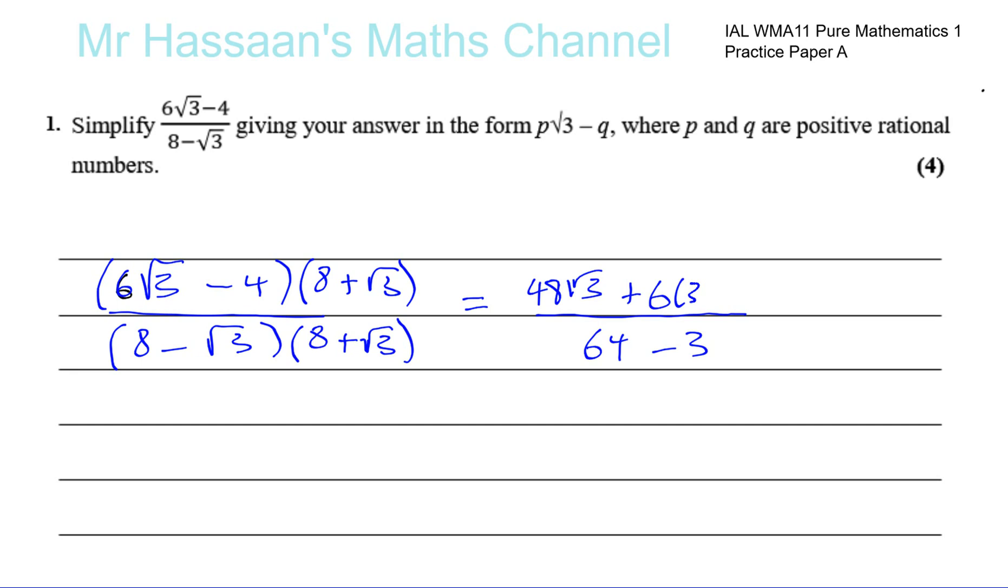√3 times itself is 3, if you remember. And then we finish with the 6√3. Now minus 4 times 8, 4 times 8 is 32, so minus 4 times 8 is minus 32. And you have minus 4 times √3, which is minus 4√3.